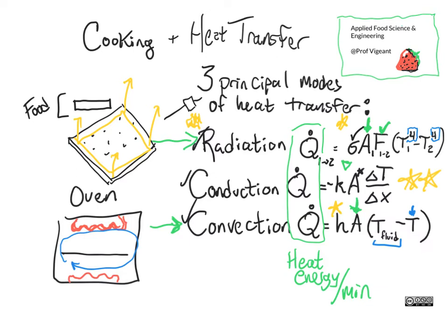Conduction goes from wherever is hotter to wherever is colder in whichever direction that happens to be, so it could be traveling sideways, up, down, and back and forth all at once. In this case, because we're looking at a big flat slab that is very thin relative to how long and wide it is, we can really think of this heat transfer in one direction only — the direction between the top and the bottom, the very thin direction of the cracker.